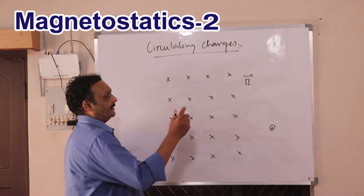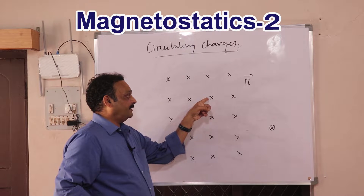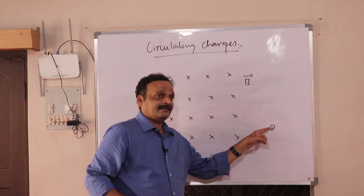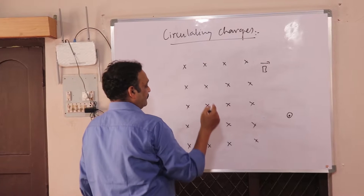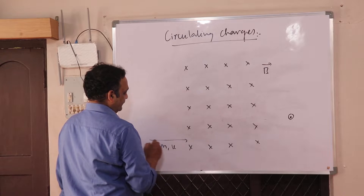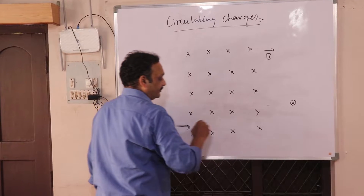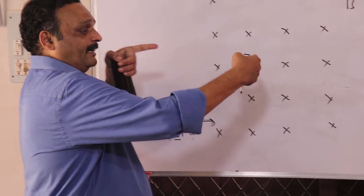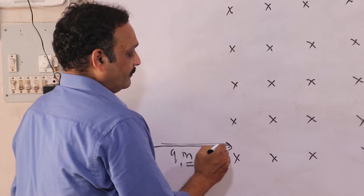Consider a uniform magnetic field B pointing into the board. When cross marks are used, it indicates that the field is pointing into the board. When a dot with a circle is used, it means the magnetic field is pointing out of the board. Here, the magnetic field is pointing into the board. I will send a particle of charge Q, mass M, and velocity V into the magnetic field perpendicularly, such that the angle between them is 90 degrees.